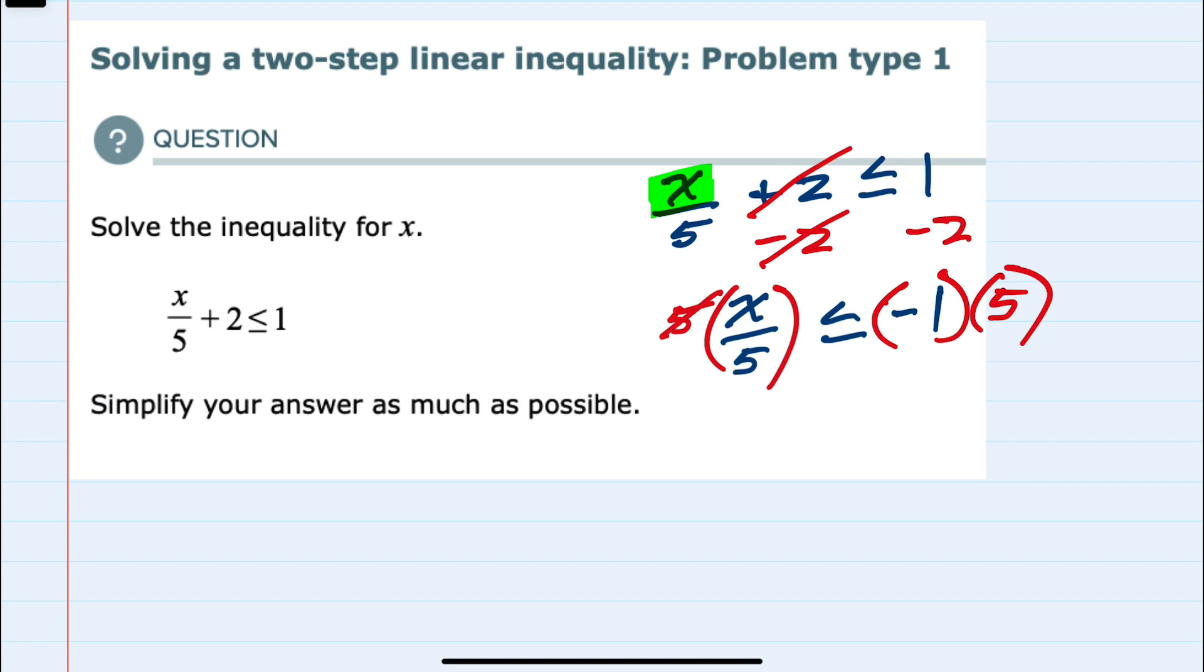That allows me to cancel the 5 in the denominator and have x by itself less than or equal to, on the right-hand side, negative 1 times 5 is negative 5. And here, I also keep the sign in the same direction.